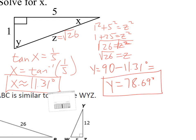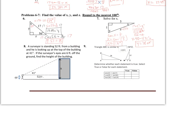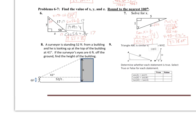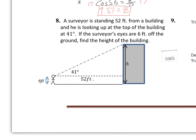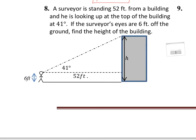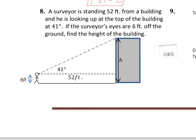Once we have X, we can find Y by subtracting: 90 minus 11.31 equals Y, so Y equals 78.69 degrees. Remember: we use inverse sine, inverse cosine, or inverse tangent — inverse ratios — to find angles.